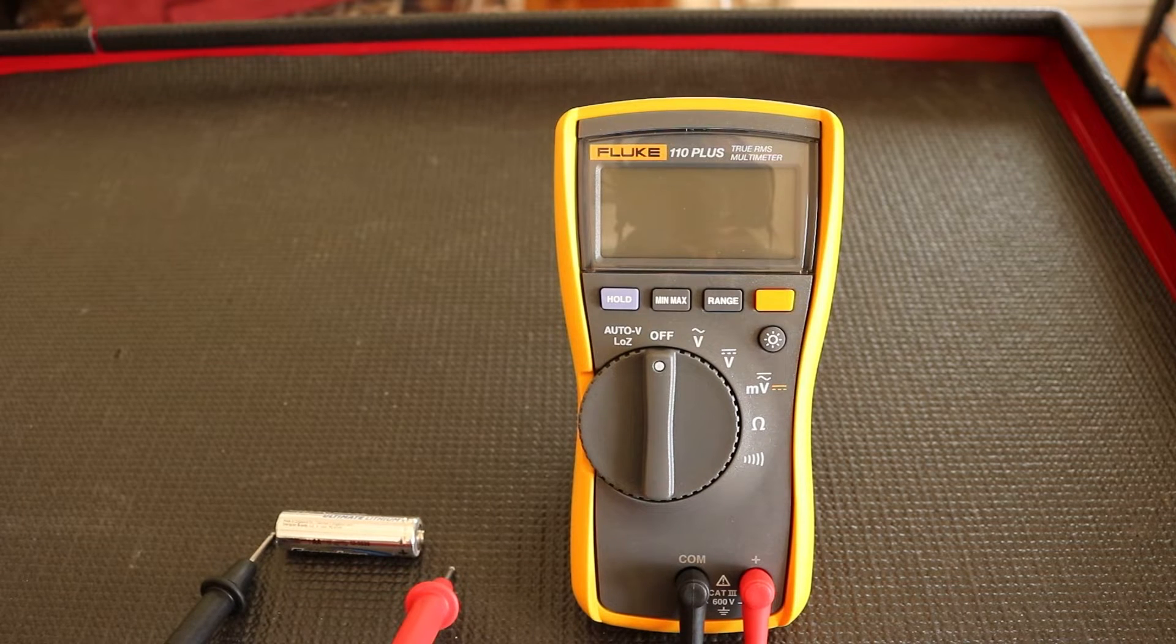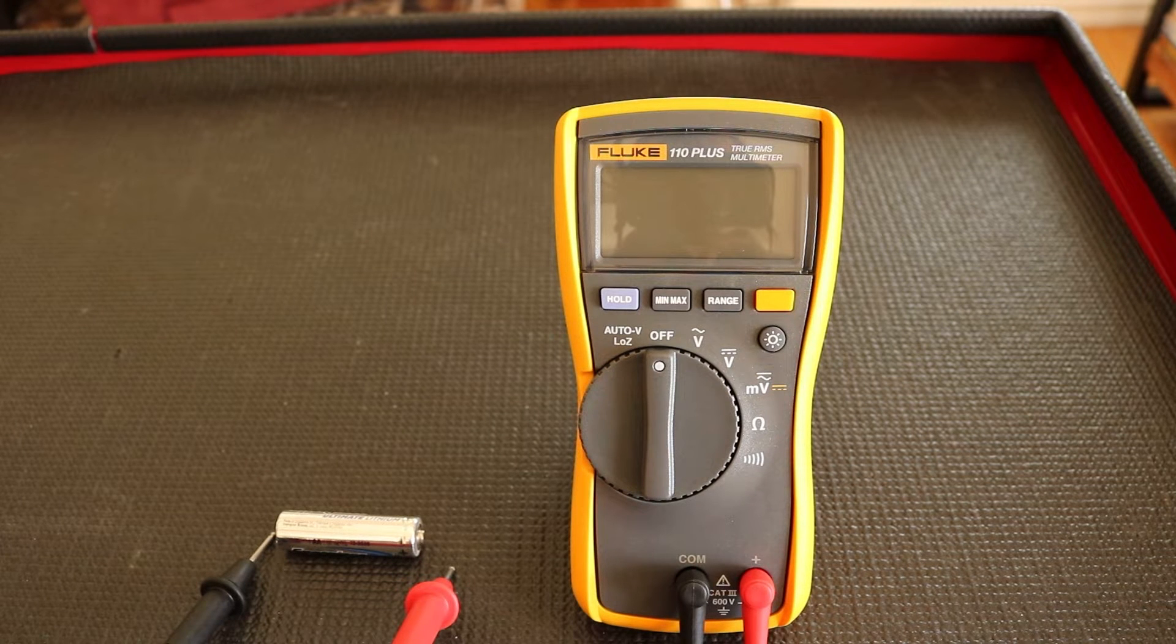So in this video, we're going to be looking at this Fluke 110 Plus series multimeter. This is part of the Fluke brand and it is considered one of the entry-level multimeters. Before we start looking at the settings and operations, let's look at the physical multimeter itself.